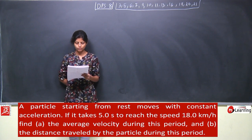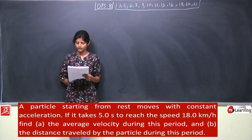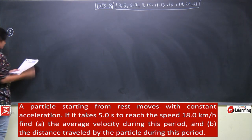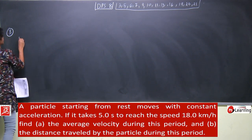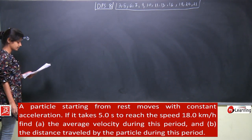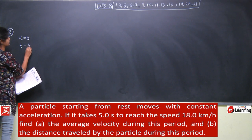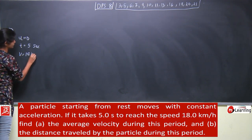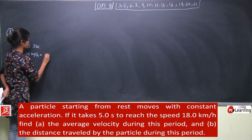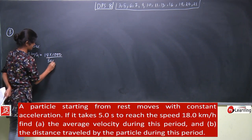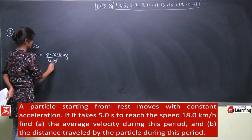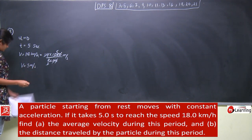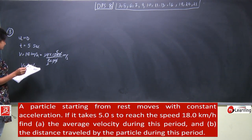A particle starting from rest moves with constant acceleration. If it takes 5 seconds to reach the speed of 18 kilometers per hour, you need to find the average velocity and the distance travelled. A particle starting from rest means initial velocity is 0, t is given to be 5 seconds, and final speed is 18 km/h, which we will first convert to meter per second — 18 into 1000 divided by 3600, which comes out to be 5 meter per second.